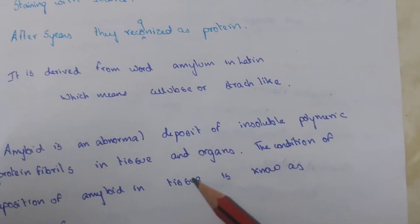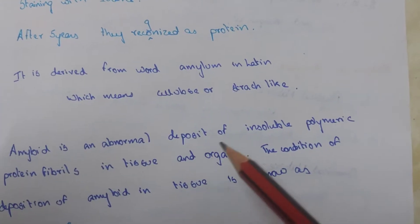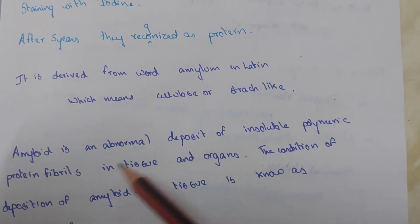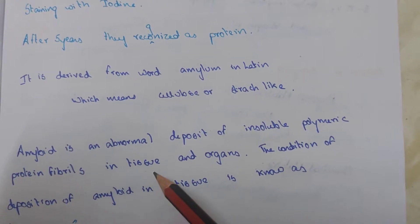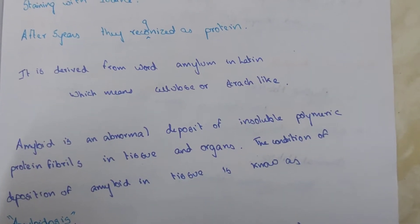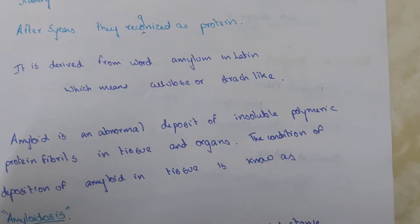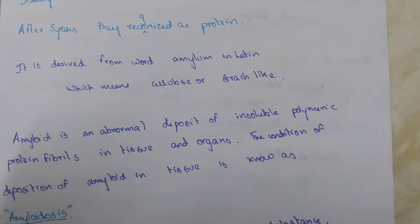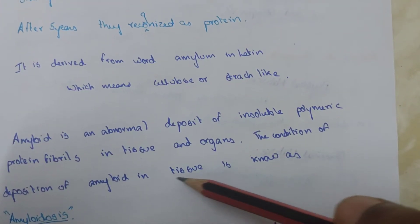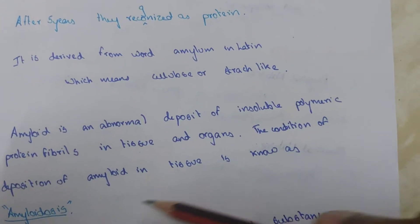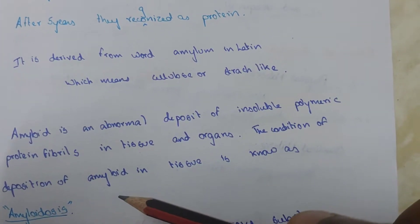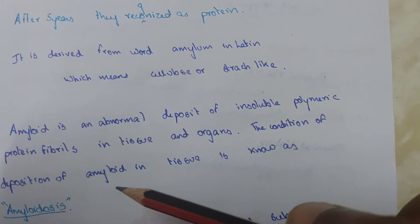Amyloid is an abnormal deposit of insoluble polymeric protein fibers in tissues and organs. The condition of deposition of amyloid in the tissue is known as amyloidosis.